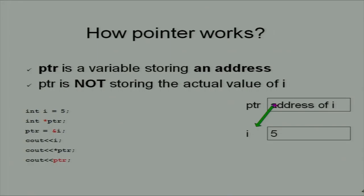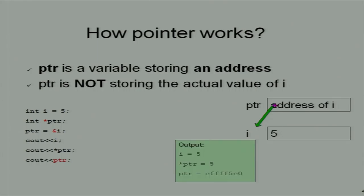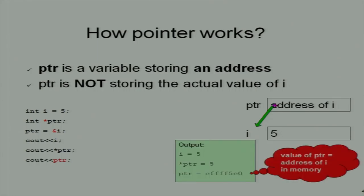How pointers work: pointer is a variable storing an address. For example, i = 5 is declared. int *ptr is the pointer of integer type storing the address of variable i. When printing the value of i, it prints 5. When printing *ptr (star ptr), it also prints 5 because it is storing the address of variable i. This is shown in a figure.